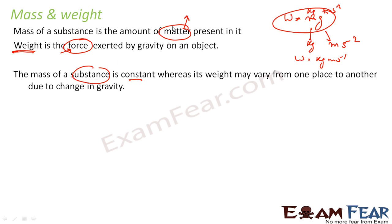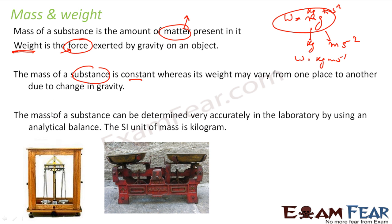If you talk about weight, weight is varying because weight is mass into gravity. Mass is constant but gravity keeps varying. Gravity in the moon and gravity in the earth is different, that is why the weight varies.